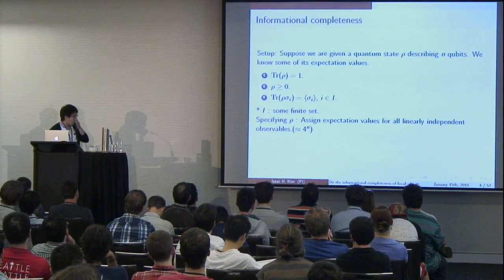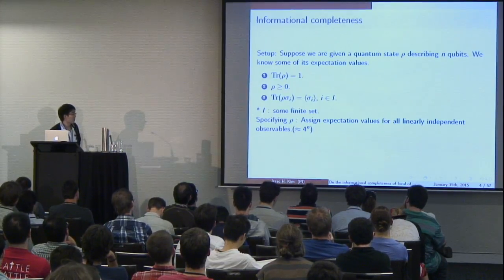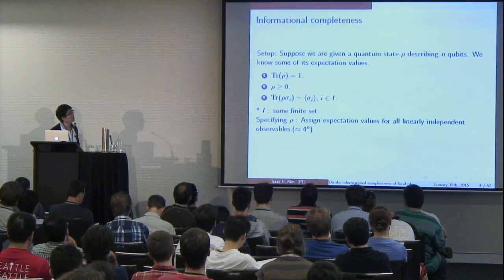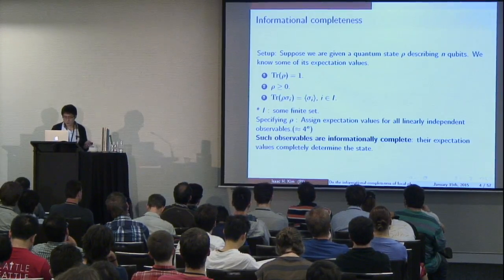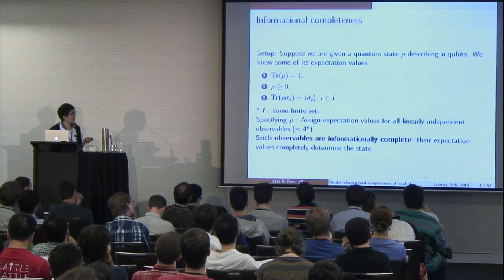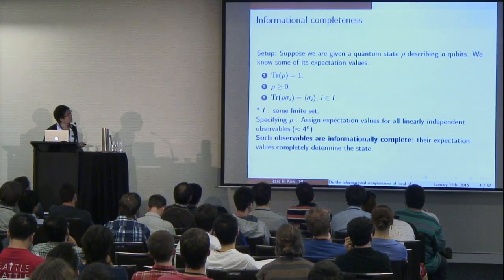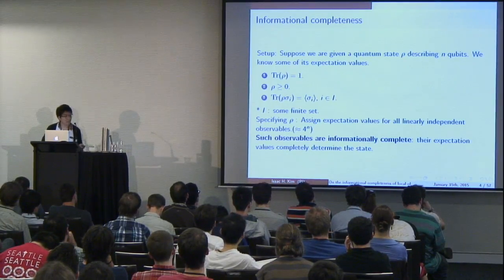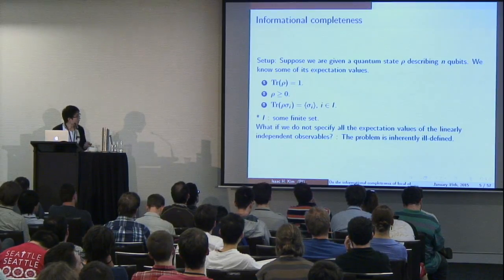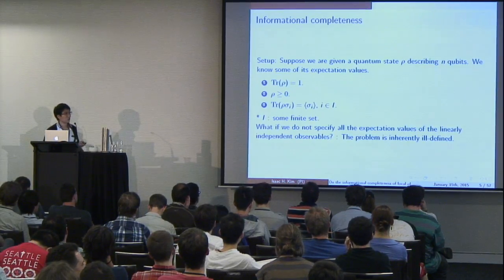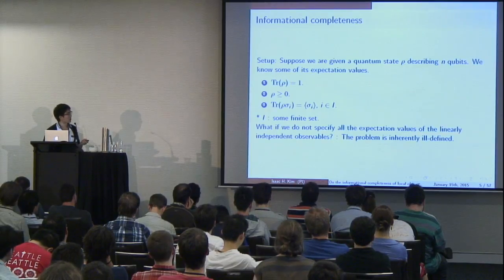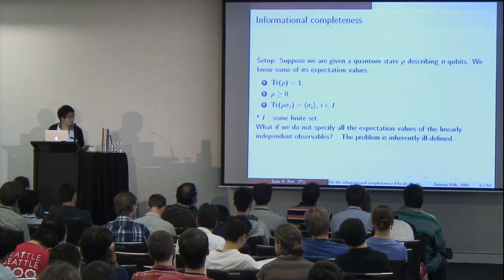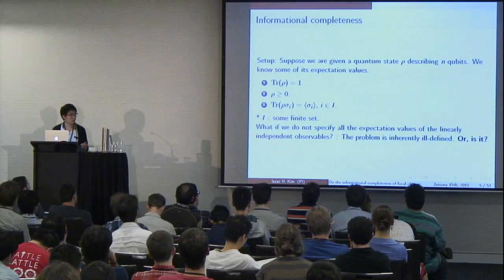Now, in order to specify rho, it seems like you need to assign expectation values for all linearly independent observables, which is roughly 4^n — a very large number. Let's say such observables are informationally complete, meaning their expectation values completely determine the state. The question I want to ask is: what if we don't know all the expectation values but only a subset? This problem seems inherently ill-defined, but I'll actually show you that this is not quite the case.